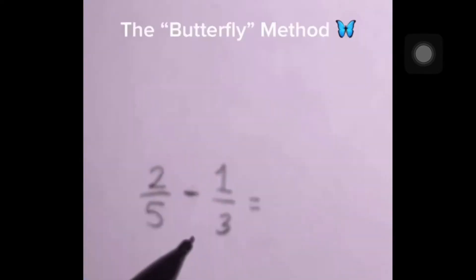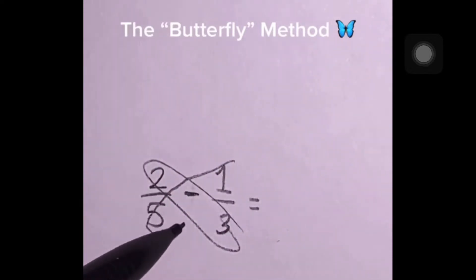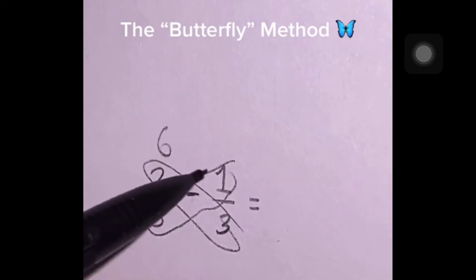Subtracting fractions. It's called the butterfly method, and if we're subtracting, our first step is to cross-multiply, so 2 times 3, 1 times 5. 2 times 3 is 6, 1 times 5 is 5.